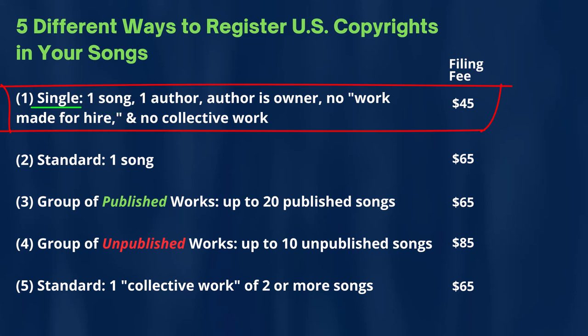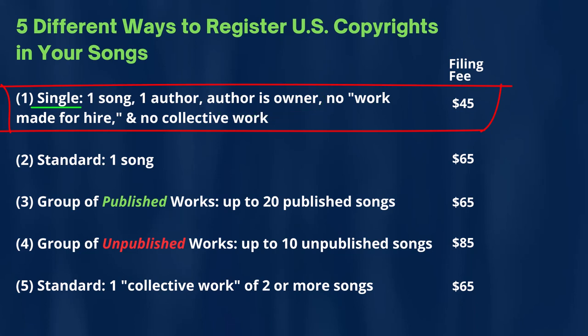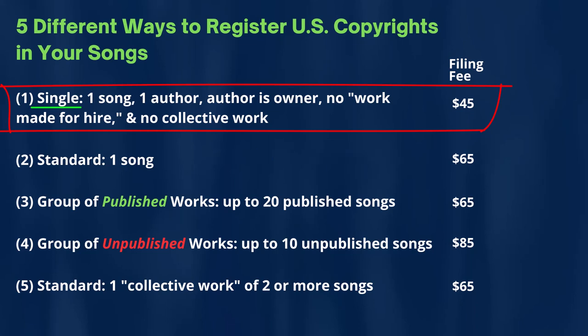Additionally, there has to be only a single author — an author is basically the same idea as the creator of the music or the song. That single author has to be the same person who is also the owner. In U.S. copyright terminology, the owner is often called the claimant.